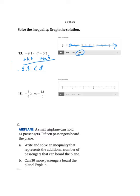All right, next I'm going to solve number 15. Same idea here. I want to solve the inequality by getting m by itself. So I will add 13 eighths to each side of the inequality. On the left, I have negative 7 eighths plus 13 eighths. That will be 6 eighths, or 3 fourths. And that's greater than or equal to m.